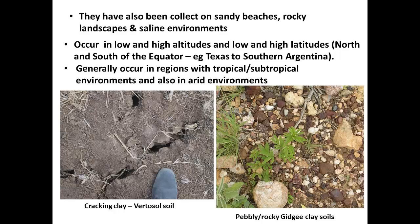Desmanthus in its native places occurs in a wide variety of areas, from sandy beaches, rocky landscapes, and even into saline environments, and they occur at low and high altitudes as well as low and high latitudes. They occur north and south of the equator, for example from Texas down to southern Argentina. Generally though, they occur in tropical and subtropical environments but can often be found in fairly arid environments.